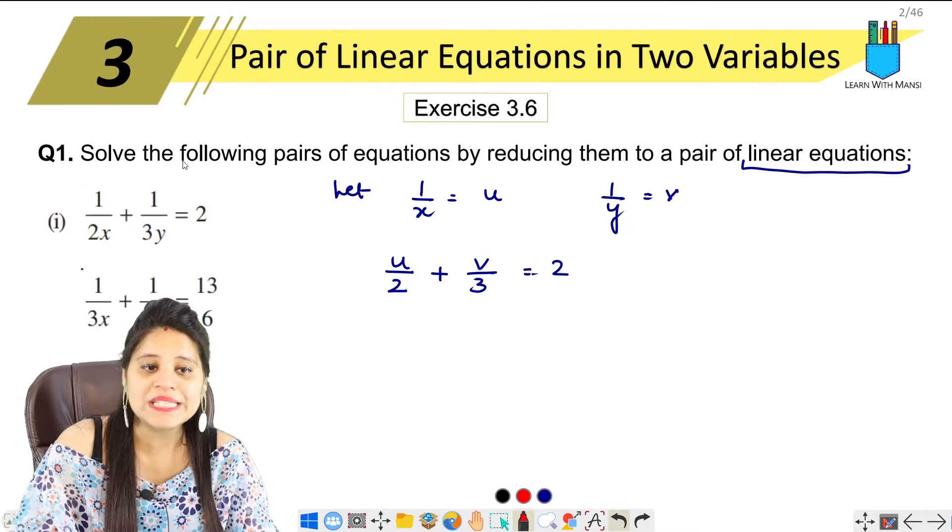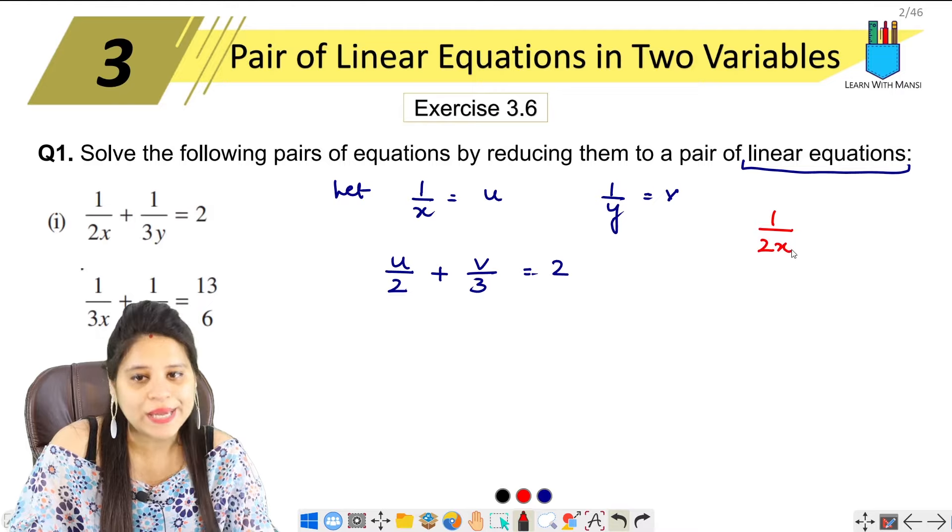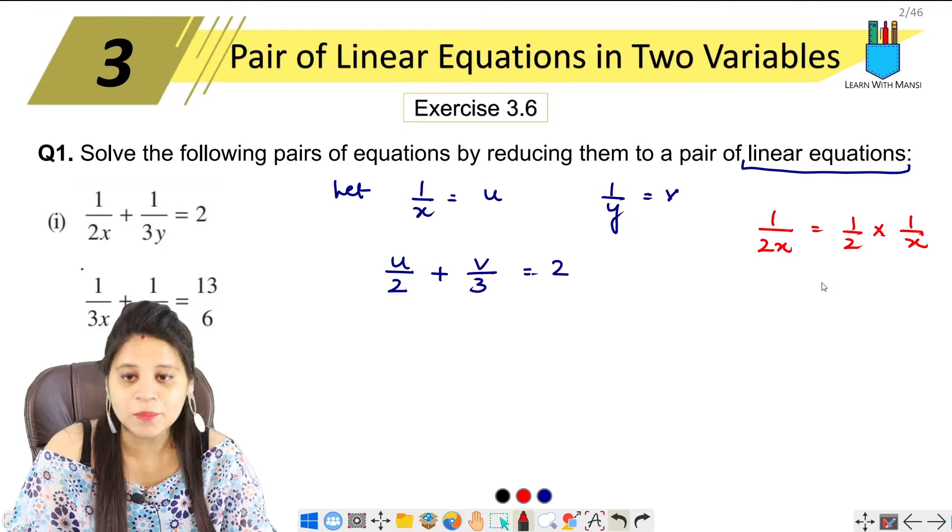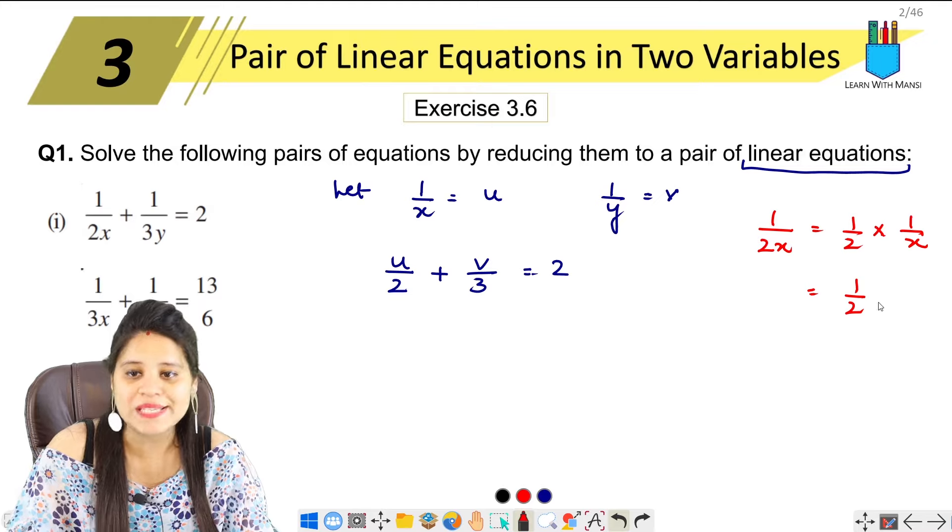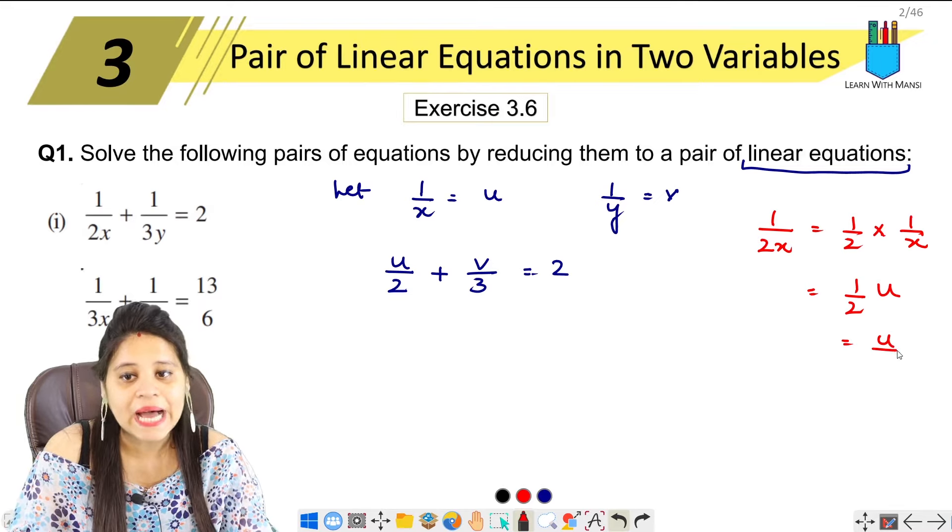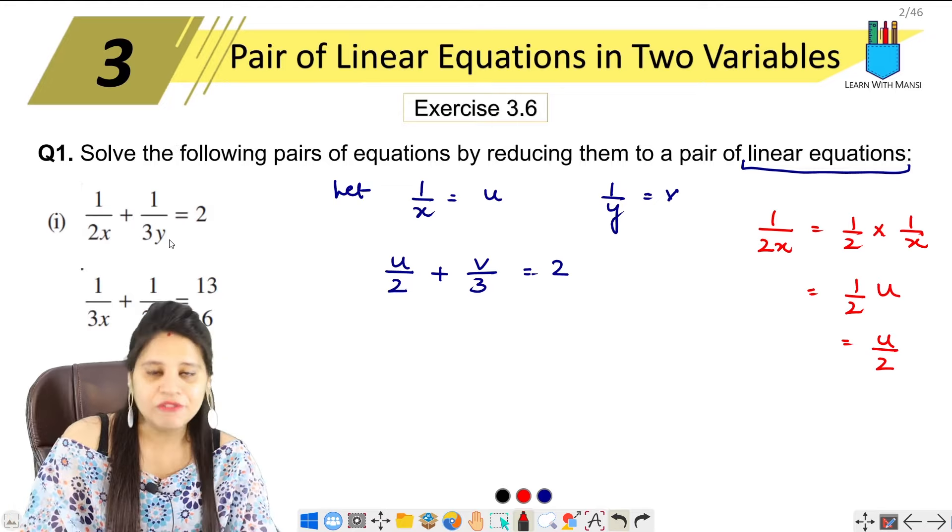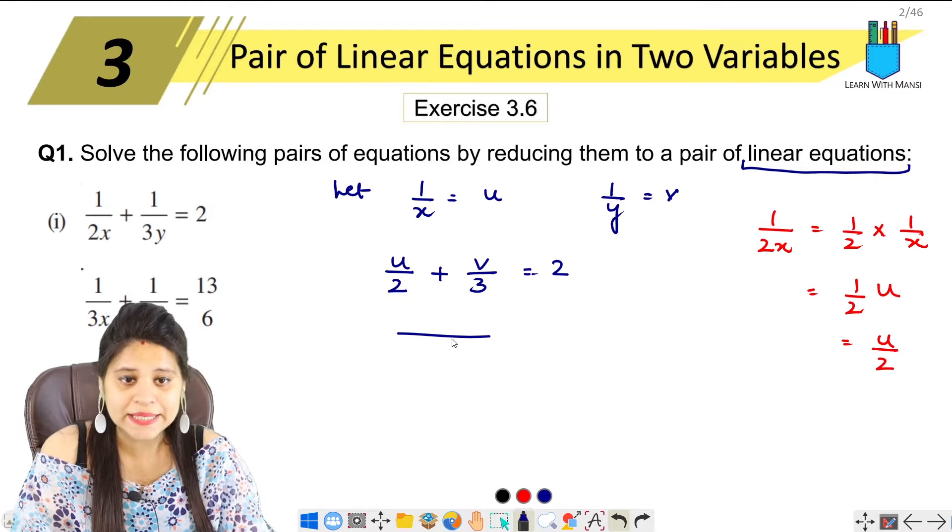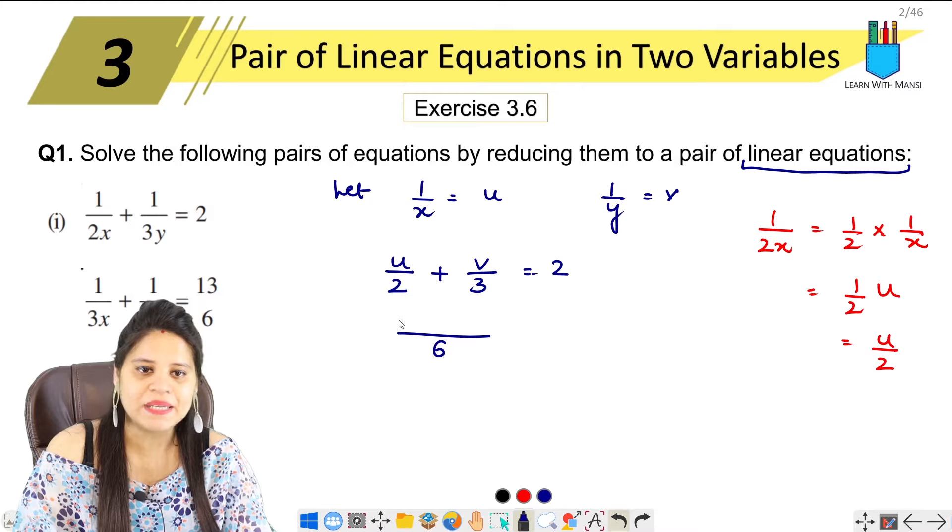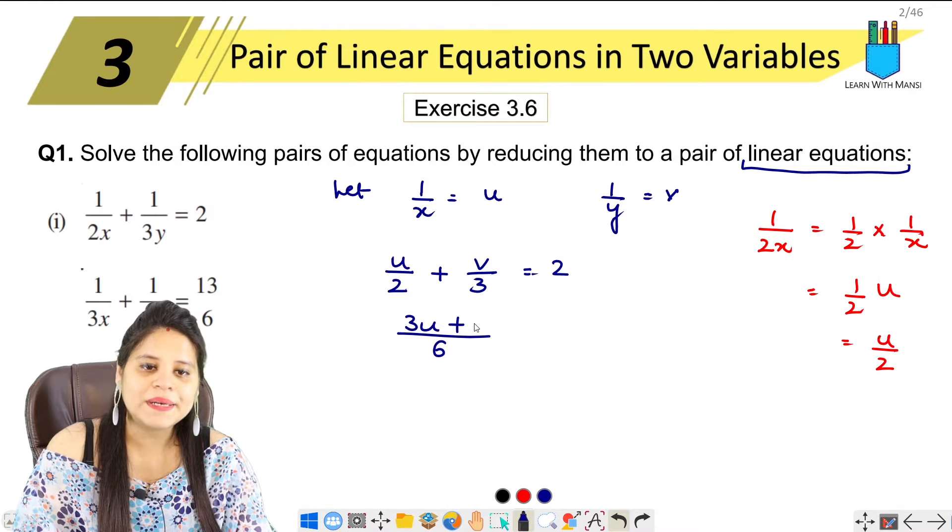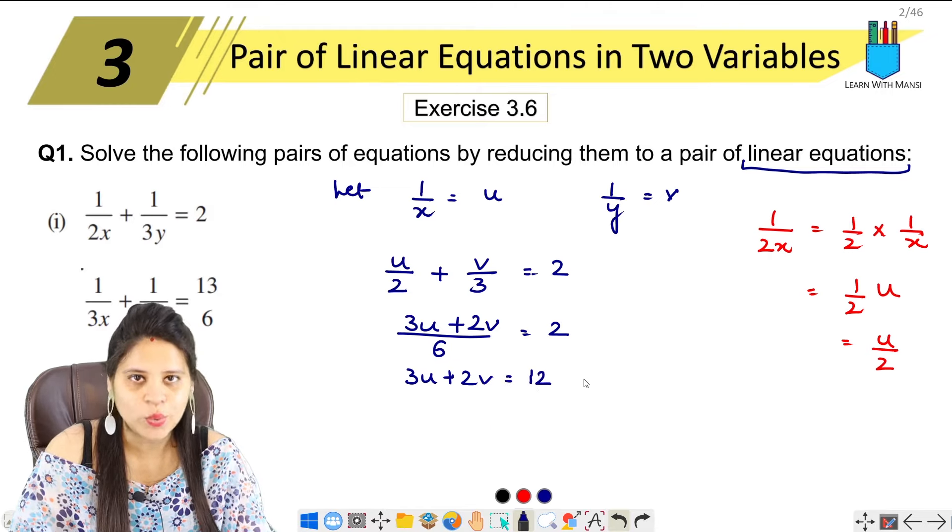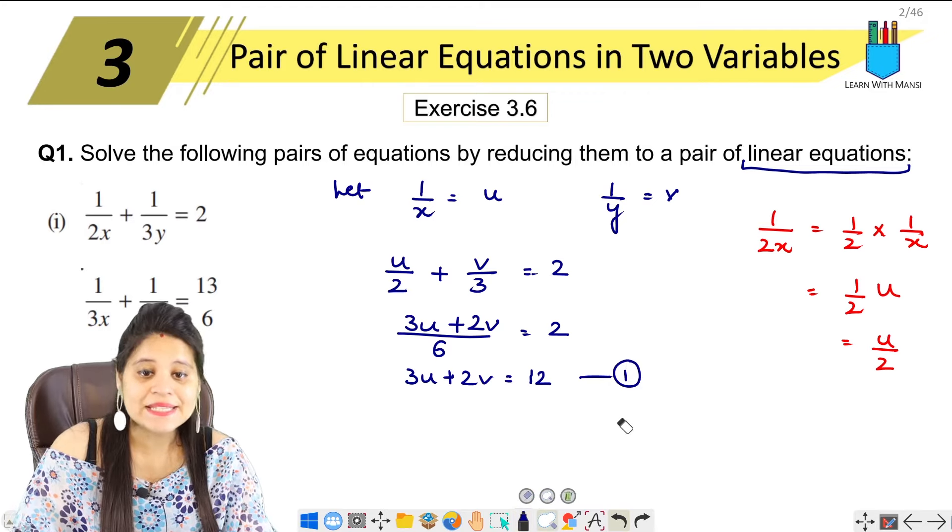So now, let's see, if 1 upon x is u, then this will be u upon 2 plus v upon 3 equals to 2. If you don't understand how it happened, let's see. 1 upon 2x means 1 upon 2 into 1 upon x. So, 1 upon 2 is as it is. 1 upon x is u. So multiply it by u upon 2. Similarly, v upon 3. Now, let's solve this equation. Let's take these two LCM. 3 and 2 LCM will be 6 and multiply it by 3. This will be 3u plus 2v equals to 2. This will be 3u plus 2v. 6 to 2 is 12. So, this is my first equation.